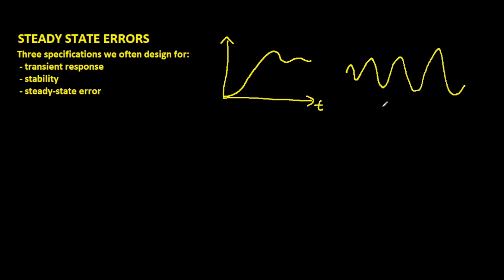We are usually not interested in having an unstable system, so we design for stability. If we have an unstable system, we try to stabilize it. A prime example of that is the inverted pendulum, or the ball and beam system. These are examples of things that are inherently unstable, but we design to make them stable.